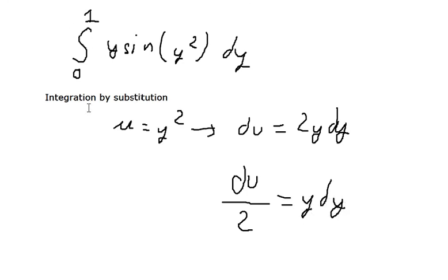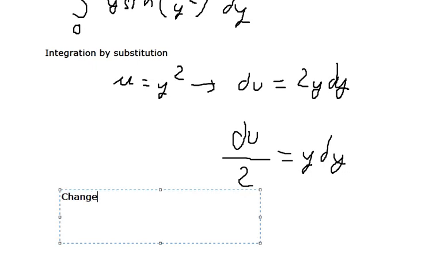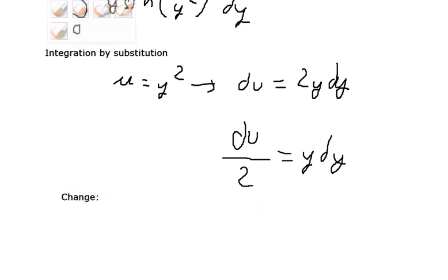Next we need to change the boundary. So if y equals zero, then u should be zero. If y equals one, then u should be one.